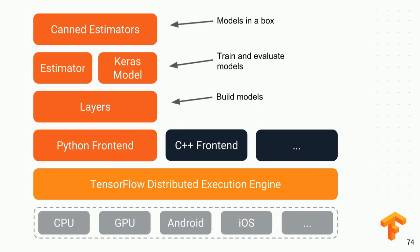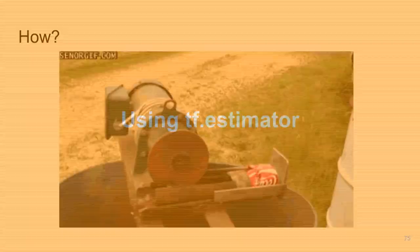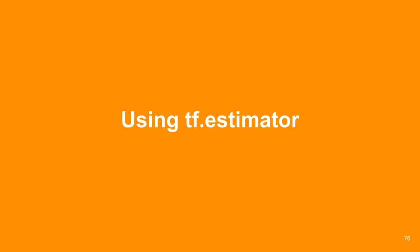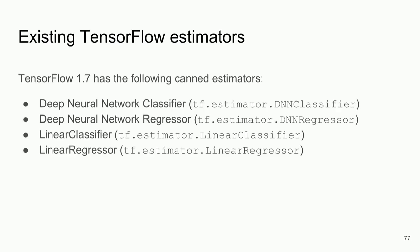TensorFlow 1.7 has the following canned estimators already available: deep neural network classifier, deep neural network regressor, linear classifier, and linear regressor. And in contrib — meaning likely in TensorFlow 1.9 or 2.0 — there are also decision trees, gradient boosted trees, random forest, k-nearest neighbors, RNNs, and more. You can also always build your own canned estimator — if Gary creates an awesome model, you can do gary.fit, gary.predict.